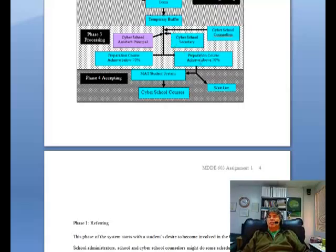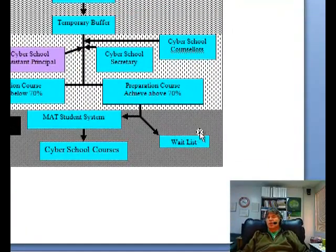Once that happens, the registrar then sends them into what we call the MAT system, which is the system that we use for communicating with our governing body here in Saskatchewan. And if we have over 35 students already in the class, then the students will go onto a waitlist. If there's no waitlist, the students go directly into the cyber school and then they can start their courses. And that's how we register students at the Saskatoon Catholic Cyber School.